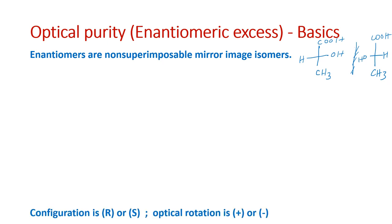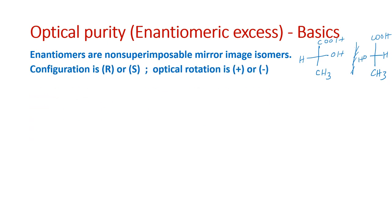When talking about enantiomers, there are two terms we must remember: configuration and optical rotation. I have drawn this molecule on paper and we know how to assign RS notation. When I assign RS notation to this molecule, because the least priority is in the horizontal position, this is R. In case of enantiomers, when we draw the structure on paper and assign RS notation, that is called configuration or absolute configuration.